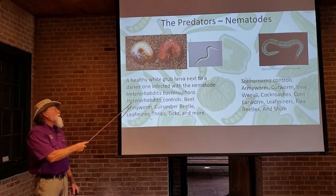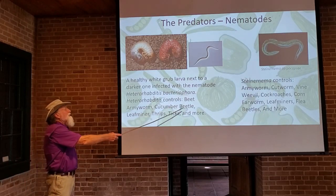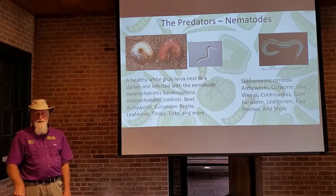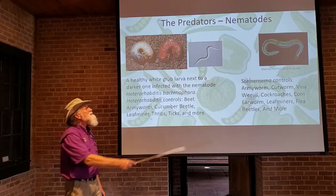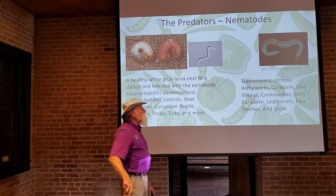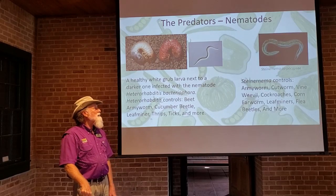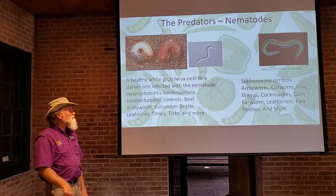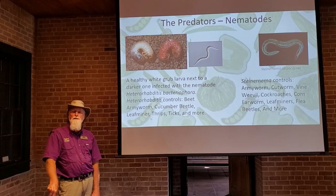Heterorhabditis bacteriophora is a commercially available species of predatory nematode that can be used to control beet army worms, cucumber beetles, leaf miners, thrips, ticks, and more. The Steinernema carpocapsae species enters the host the same way and can be used to control army worms, cutworms, vine weevils, cockroaches, corn ear worms, leaf miners, flea beetles, and more. There are even predatory nematodes available to control fleas in your yard.